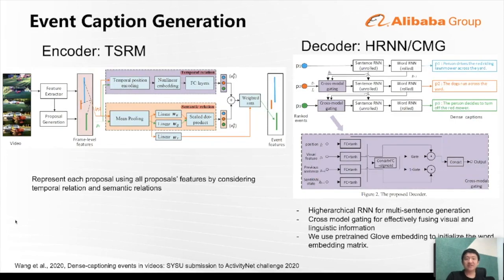The event caption generation module adopts the encoder-decoder structure. For the captioning encoder, we use the TSRN module, where each proposal is represented using all proposal features by considering temporal relation and semantic relation. For the captioning decoder, the hierarchical RNN module is used for multi-sentence generation, and a cross-modal gating is used to effectively fuse visual and linguistic information. More details can be found in the technical report.